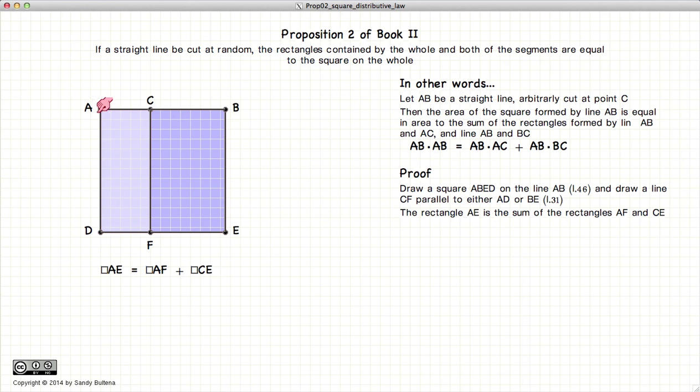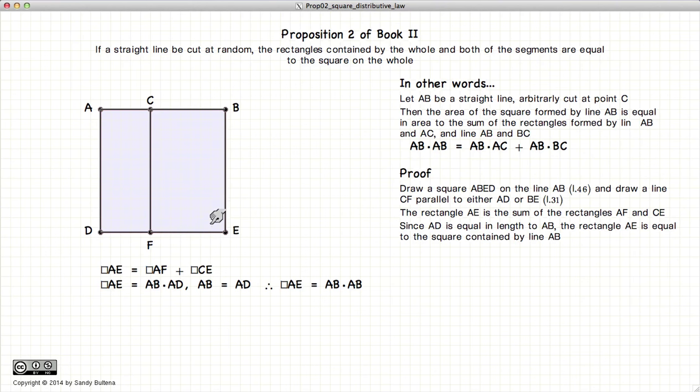Now the rectangle AE is equal to the sum of the rectangles AF plus CE. Since AD is equal to AB, then the rectangle AE is equal to AB squared.